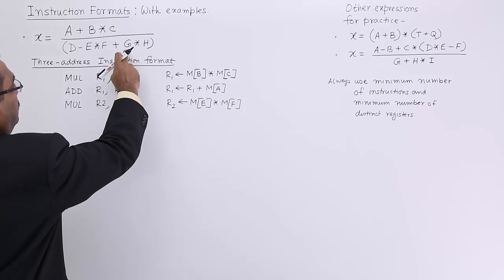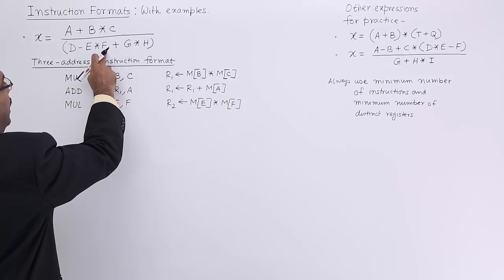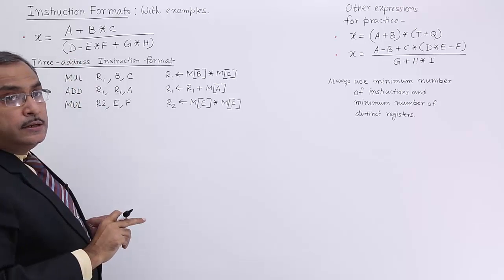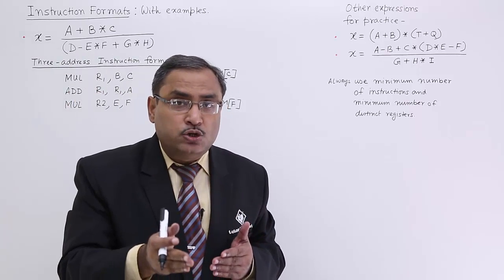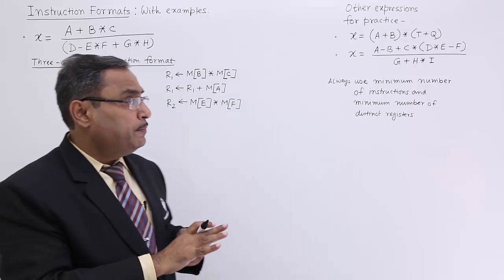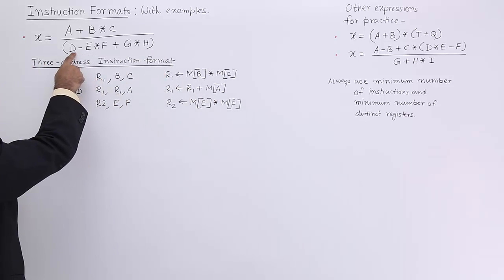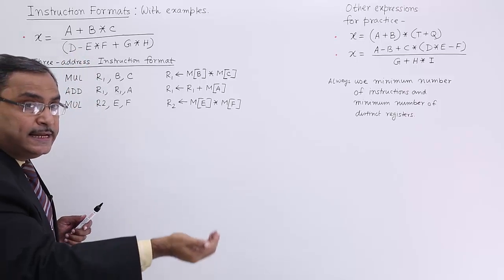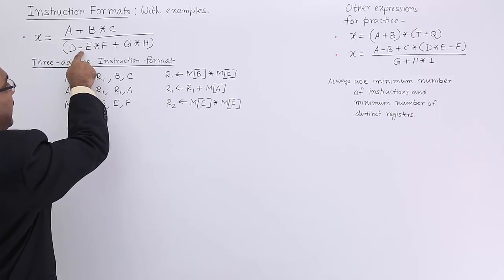Now see, this R2 is to be deducted or subtracted from D. D minus R2 has to take place. Remember, its sign is plus and its sign is minus. The sign always precedes.